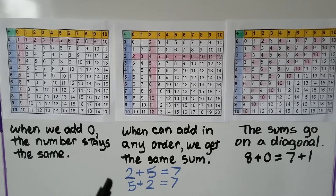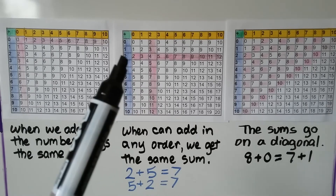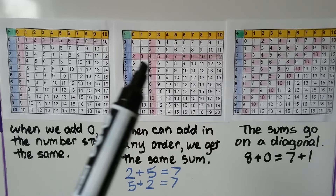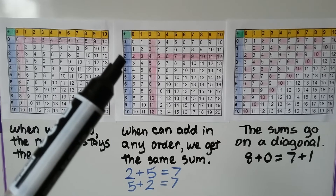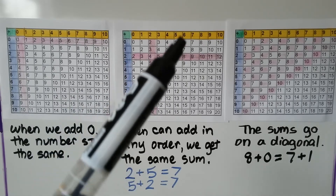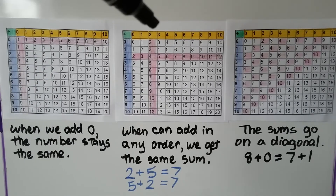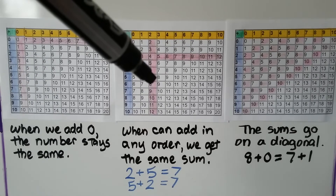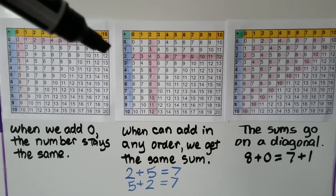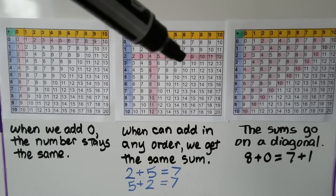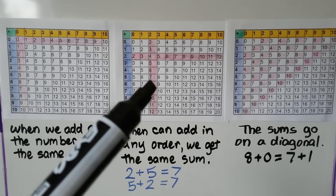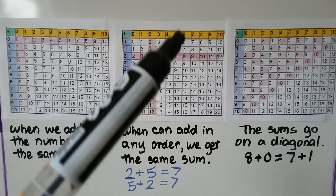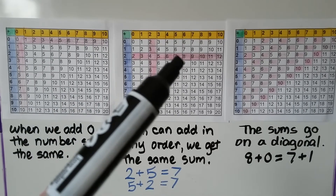We can also add in any order and we'll get the same sum. We can add 2 to 2, 2 to 3, 2 to 4, 2 to 5, and we'll get these as the sum. It would be the same as adding 2 this way to numbers in the yellow bar. Here's 2 — if we add it to 6, we'll get an 8. And if we go 2 this way and add it to a 6, it's still an 8. We can add 2 plus 5 and it'll equal 7, or 5 plus 2 and it'll equal 7. Either way, we've got a 7.